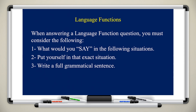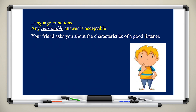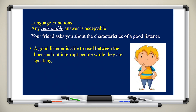Now, language function. When answering a language function question you must consider: one, what would you say in the following situation; two, put yourself in the exact situation; three, write a full grammatical sentence. Some students answer with only 'okay' — this is not acceptable. Any reasonable full-sentence answer is acceptable. For example, if your friend asks about the characteristics of a good listener: a good listener is able to read between the lines, does not interrupt people while they are speaking, and does not judge before comprehending the whole story.